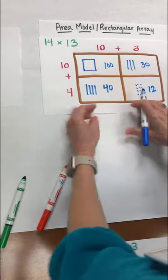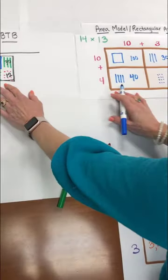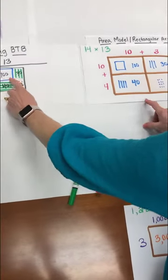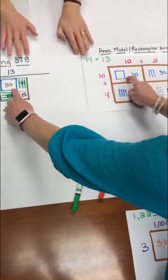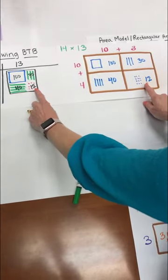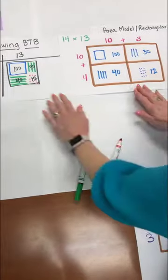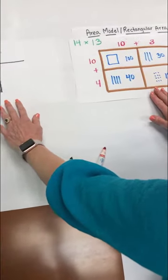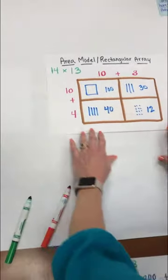And let's connect that back to my base 10 block drawing. Here's my 100, my 30, my 40 and my 12. And we want students to see each of these steps side by side. It helps them to make those connections.